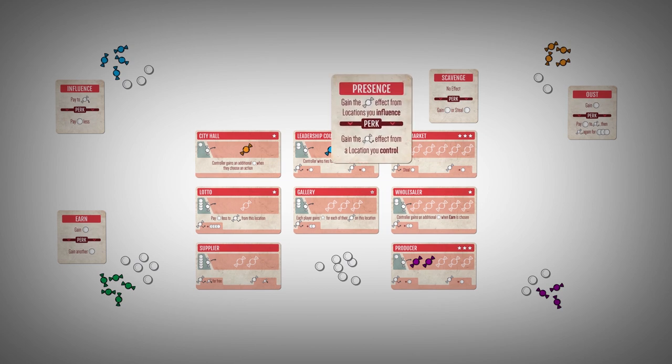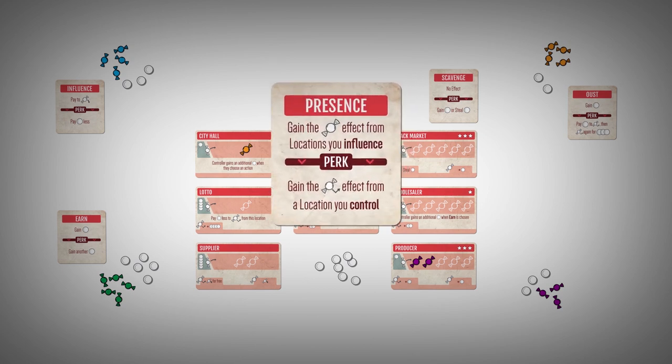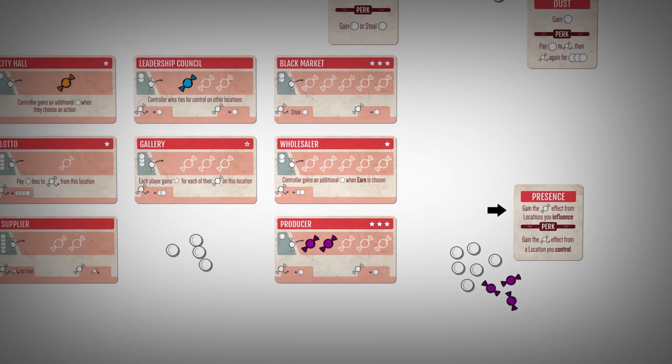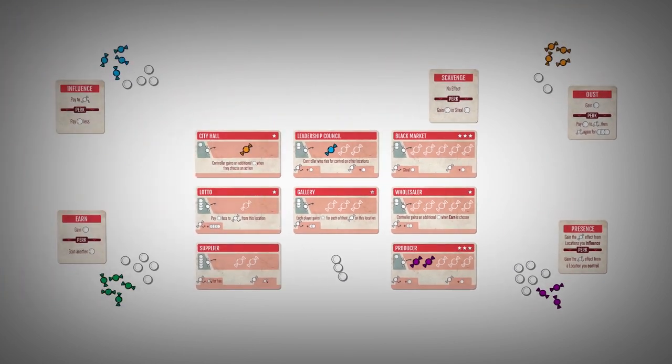The presence action grants each player the presence bonus for each location where they have influence. The perk for this action is to also gain the oust bonus from a location that the player controls. A player has influence at a location as long as they have one influence token on it. They do not need to control it.